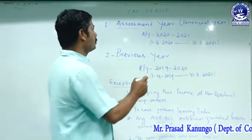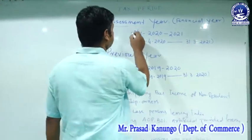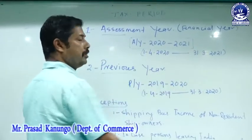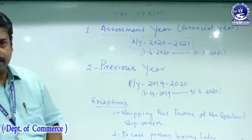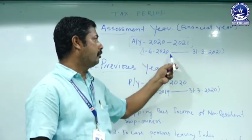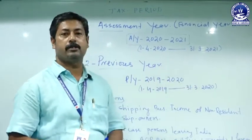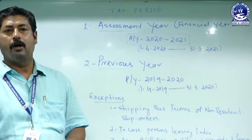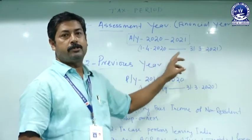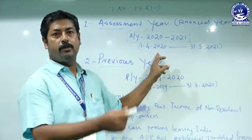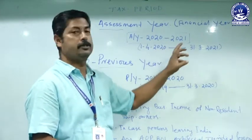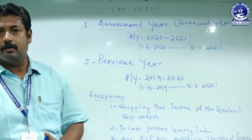The assessment year starts from 1st April and ends with 31st March of the next year. The current assessment year is 2020–2021, starting from 1st April 2020 and ending with 31st March 2021. Within this period, the person who derives income in the previous year is liable to pay the tax in the assessment year.